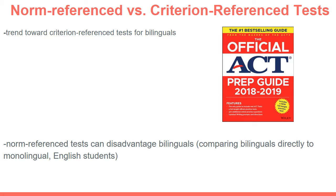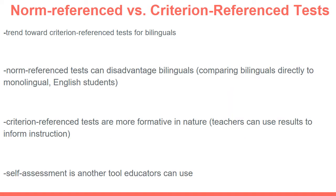They do need formal support from schools to overcome the lack of exposure they might get at home to English vocabulary words. Another reason criterion reference tests are encouraged for bilingual students is that they are similar to formative assessments — teachers can use results from criterion reference tests to directly inform their instruction. They know the specific skills students need to improve upon and can apply those in the classroom.